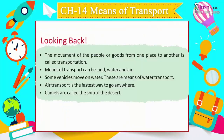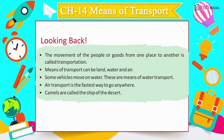Looking back: The movement of people or goods from one place to another is called transportation. Means of transport can be land, water, and air. Some vehicles move on water — these are means of water transport. Air transport is the fastest way to go anywhere. Camels are called the ship of the desert.